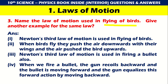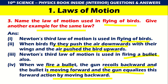Next question: Name the law of motion used in the flying of birds. Newton's third law is used in the flying of birds. When birds fly, they push the air downwards with their wings and the air pushes the bird upward. Newton's third law of motion is also used in firing a bullet — when we fire a bullet, the gun recoils backward and the bullet moves forward, equalizing the forward action by moving backward.